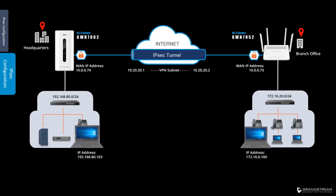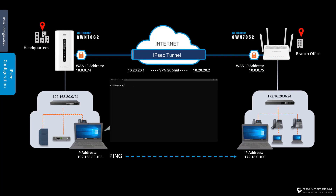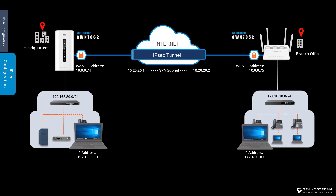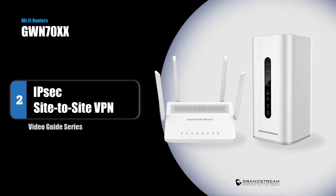To ensure the VPN tunnel is working correctly, we will use a computer in the corporate office to ping a computer in the branch office. The ping results are successful. Ping queries from the computer in the branch office should yield the same result. This concludes today's video guide. In the next video, we will talk about site-to-site VPN with OpenVPN. Thank you for watching.